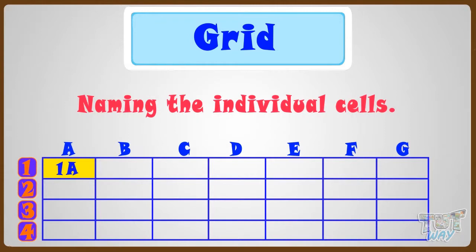Similarly, let's name the other cell in this row. This is 2A, as the column name is A, and the row name is 2. Now let's name this cell. It is 3A, as the column name is A, and the row name is 3. Similarly, this is 4A.